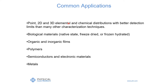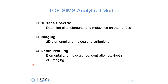SIMS has better detection limits than many common characterization techniques, and this is one of its advantages. We can look at a range of different materials: biological materials sometimes in their native state if they're dry enough, or in freeze-dried or frozen-hydrated form if very wet. We can look at organic and inorganic materials, polymers, semiconductors, electronic materials, and metals. The type of data we acquire typically consists of spectra, images, or depth profiles, and the advantage of SIMS is that we can detect all the elements in the periodic table with very good sensitivity.